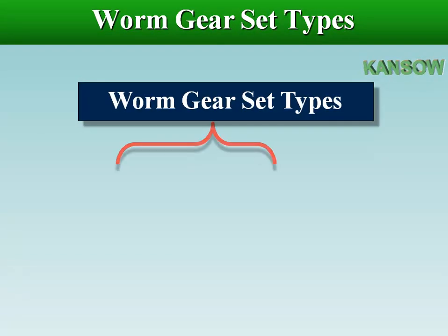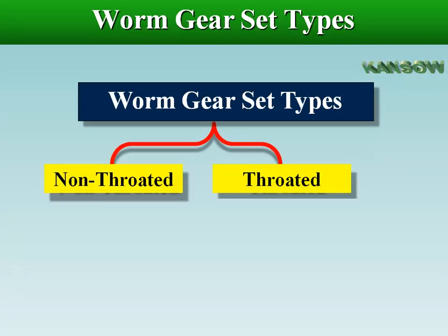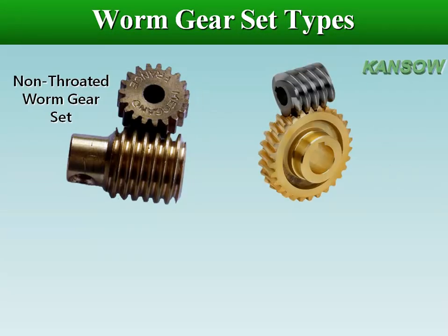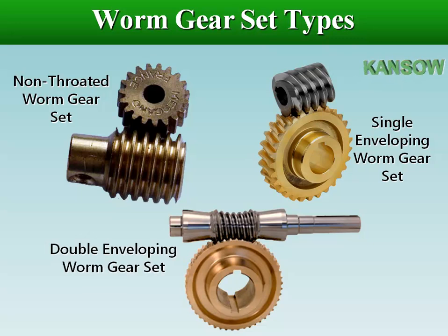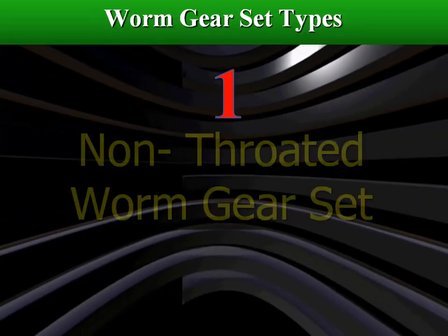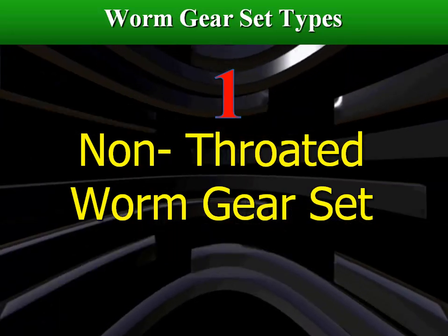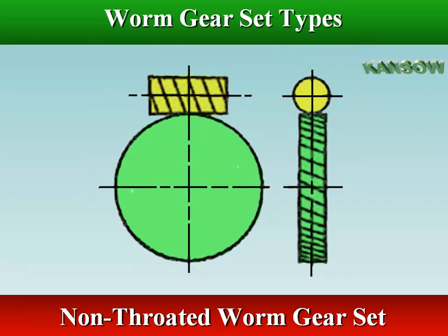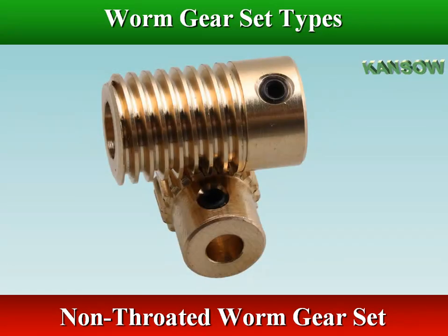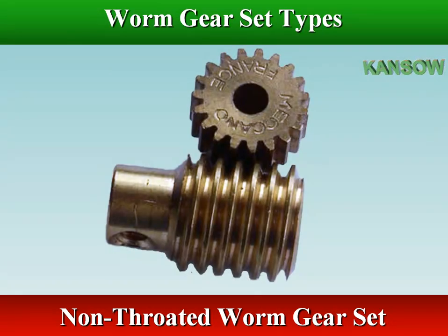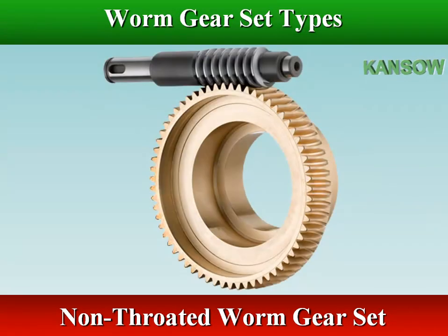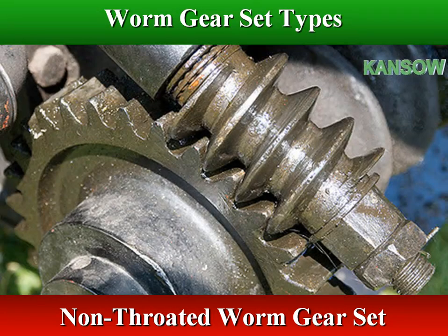There are three different types of gears used in a worm drive: non-throat, single-enveloping, and double-enveloping worm gear sets. Non-throat worm gears don't have a throat or groove machined around the circumference of either the worm or worm wheel. A non-throat worm gear is essentially a helical gear with a straight worm, where tooth contact is a single moving point on the worm drive, and neither the worm nor the driven gear is throated.